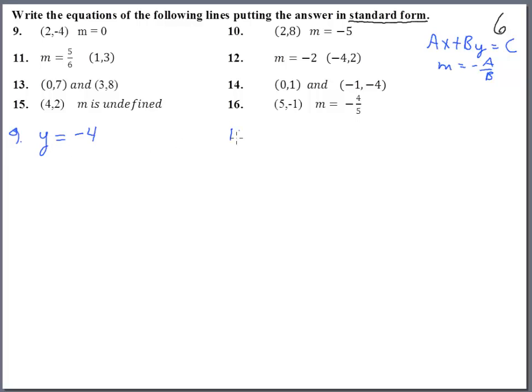Number ten, slope is negative five. That means we've got 5x plus y equals. Now we stick in two for x, that gives us ten, plus eight is eighteen.